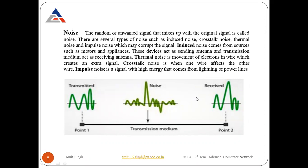Induced noise comes from sources such as motors and appliances, which act as sending antennas while the transmission media acts as a receiving antenna. Thermal noise is the movement of electrons in a wire, which creates extra signals that travel along with the original signal. Crosstalk noise occurs when one wire affects another — two wires overlap and their signals conflict with each other. Impulse noise is a high-energy signal coming from lightning or power lines; when power is high, electrons move very fast and produce noise.